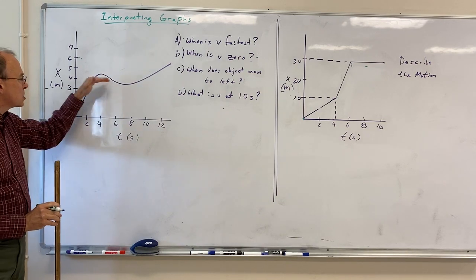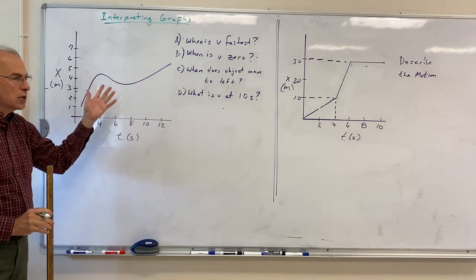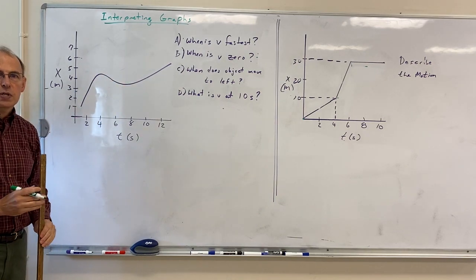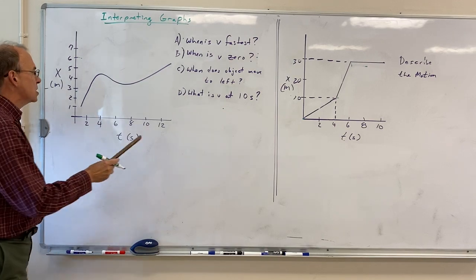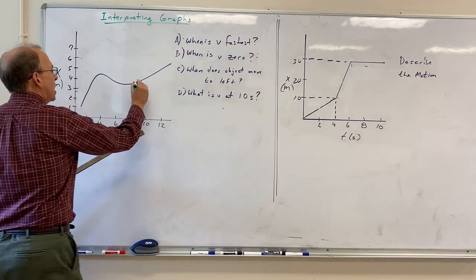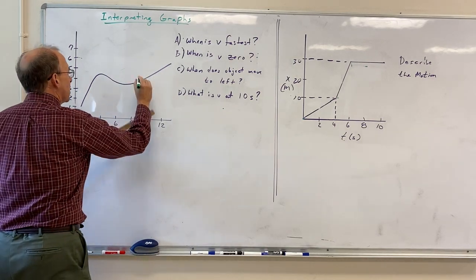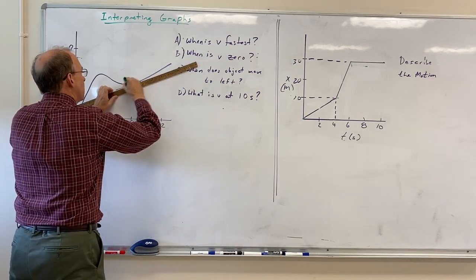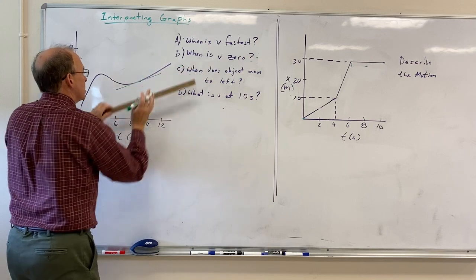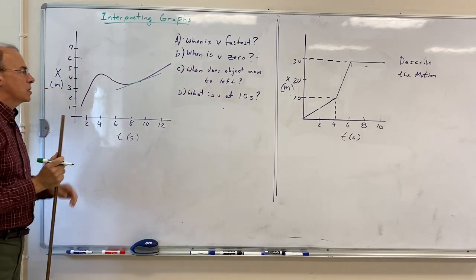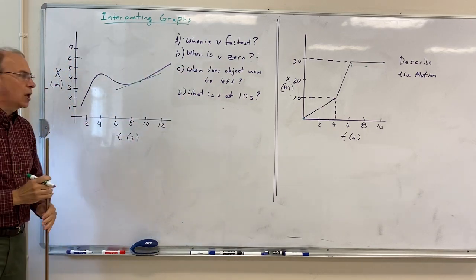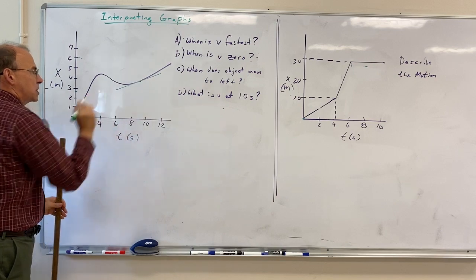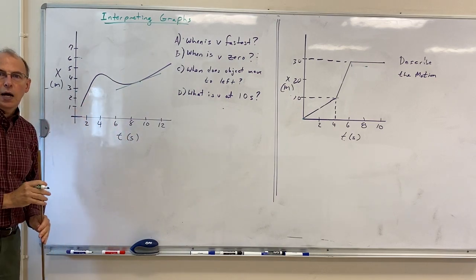Since this is a smooth curve, not straight lines, slope in this case means slope of the tangent. So for example, at a given point here, the slope would be the slope of the tangent. And so the slope of that tangent line is the velocity at that particular time.